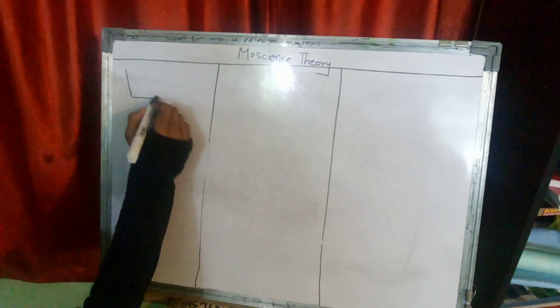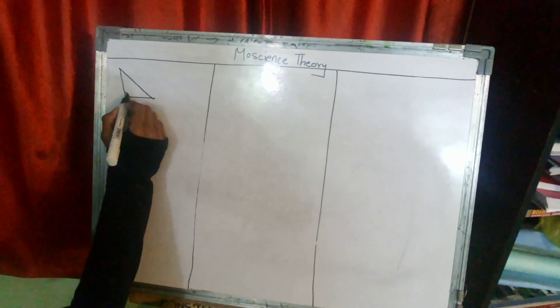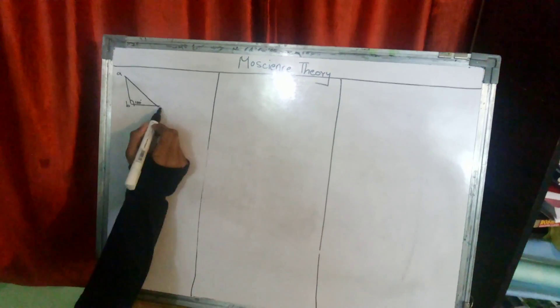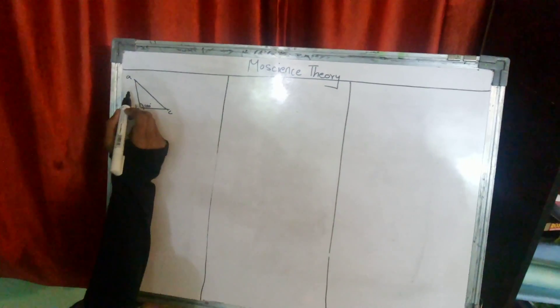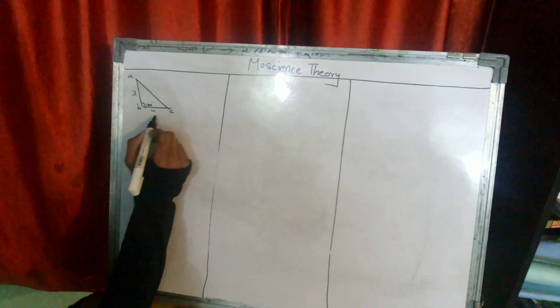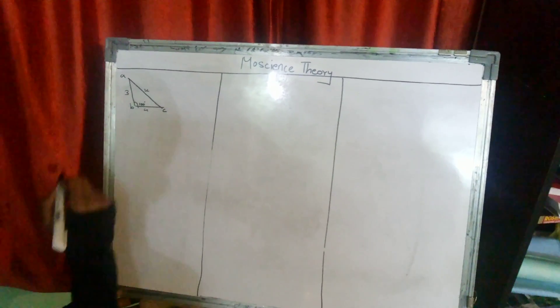We have a triangle with a 100 degree angle. Length A, B and C. Suppose length A is 3cm, length B is 4cm. So find length C.